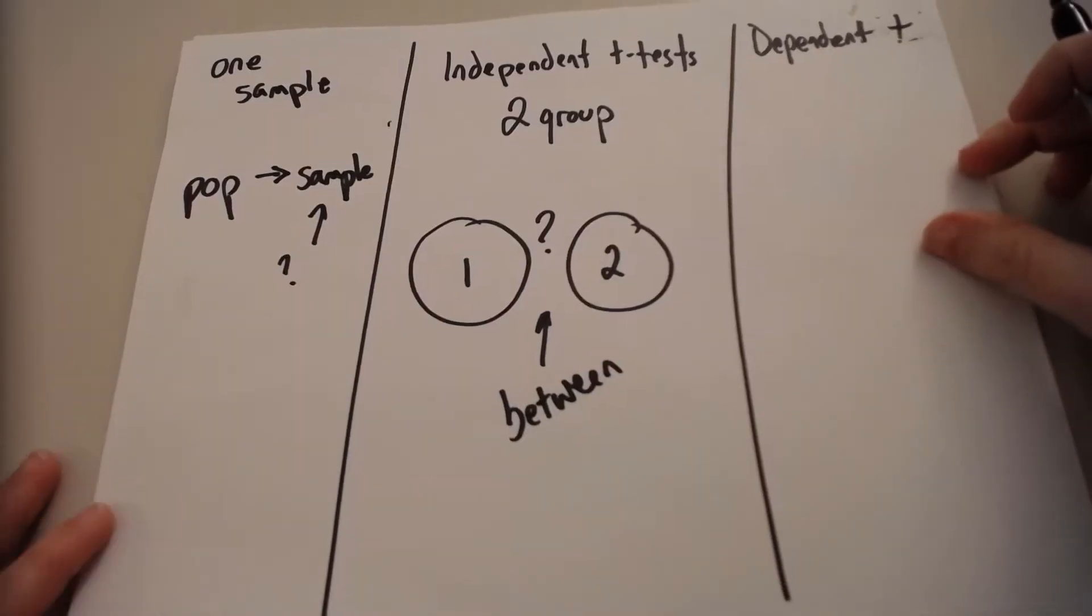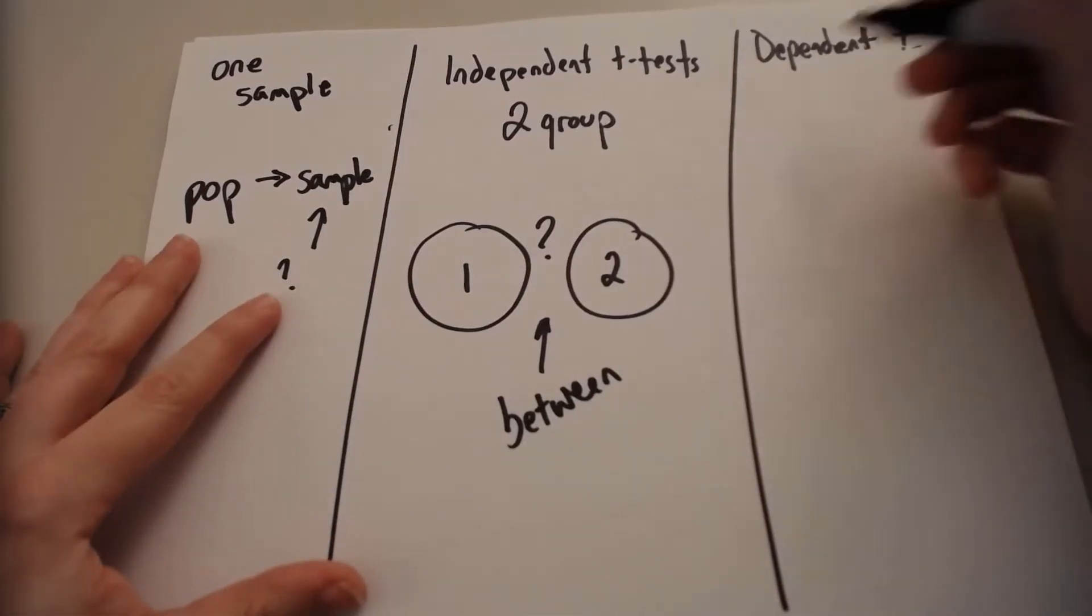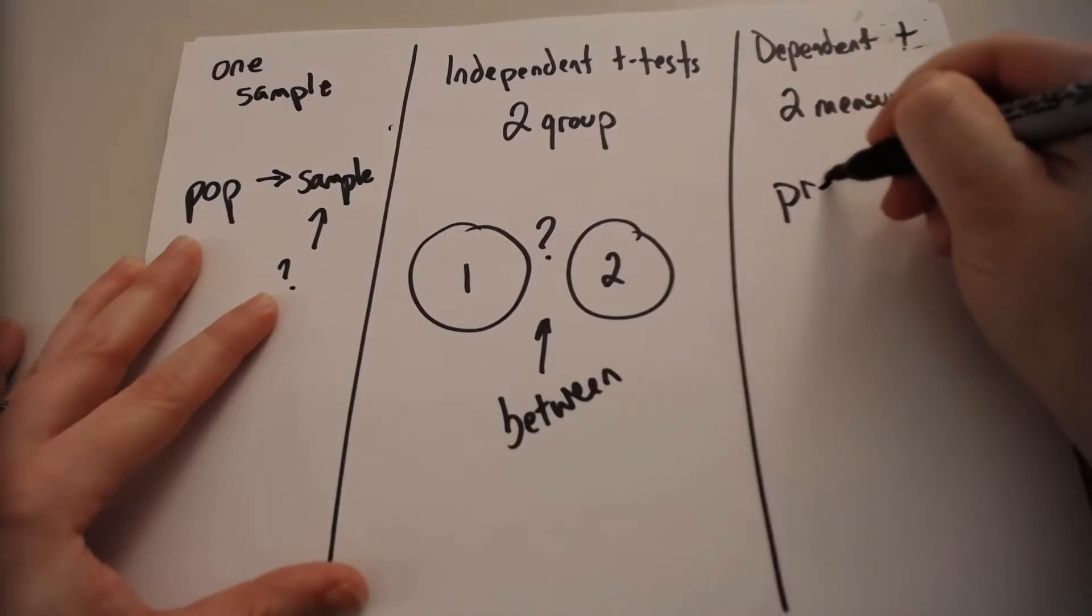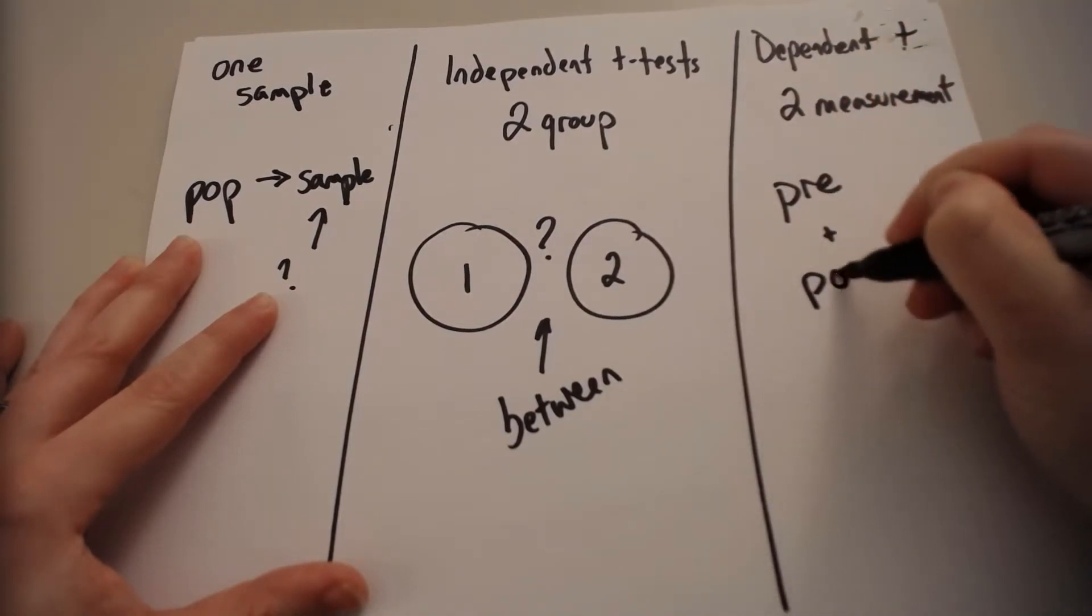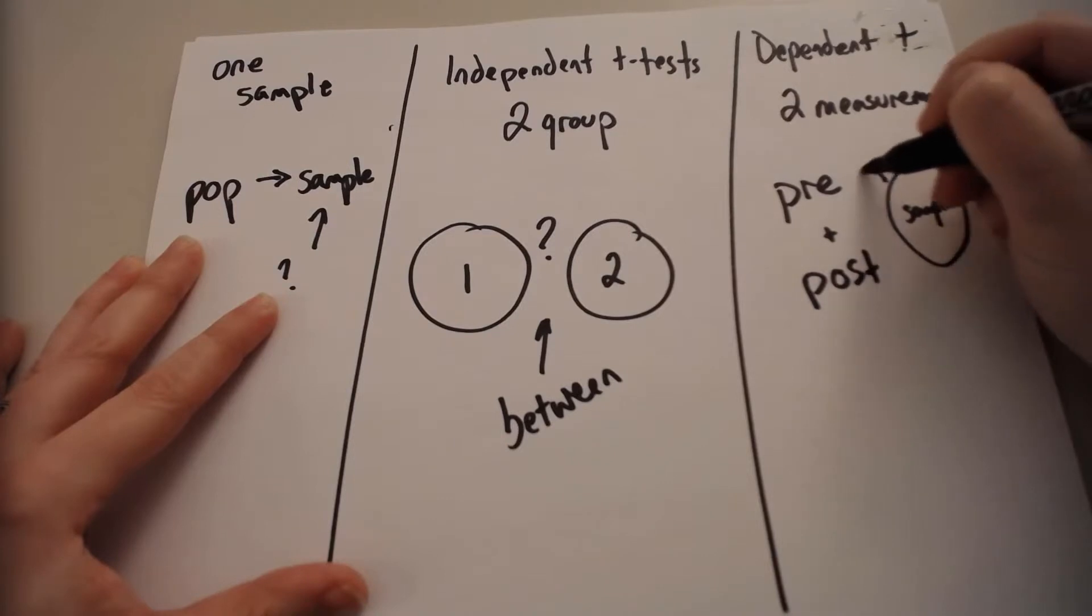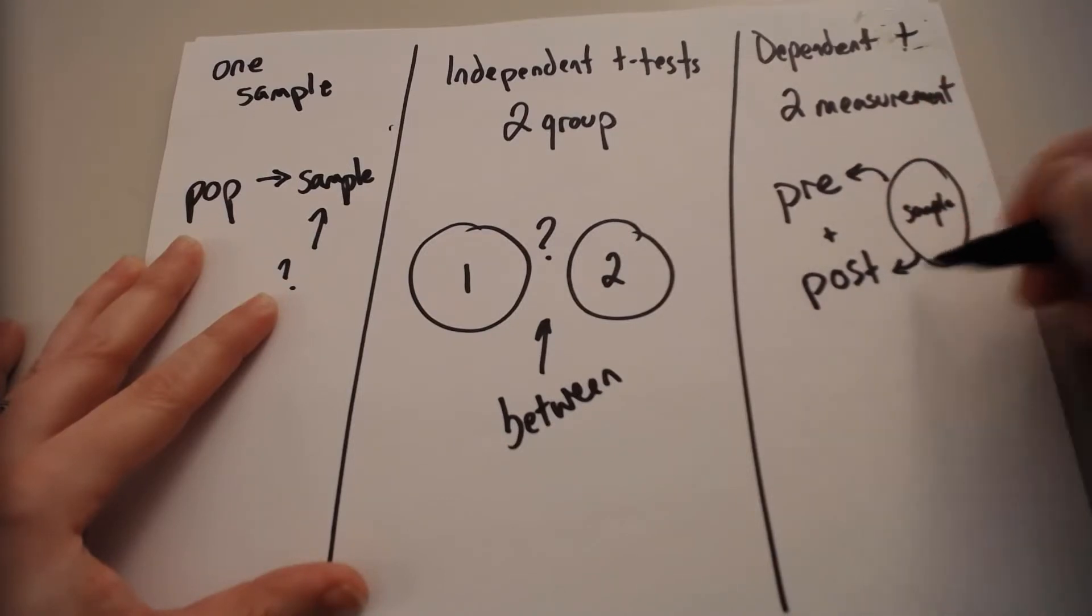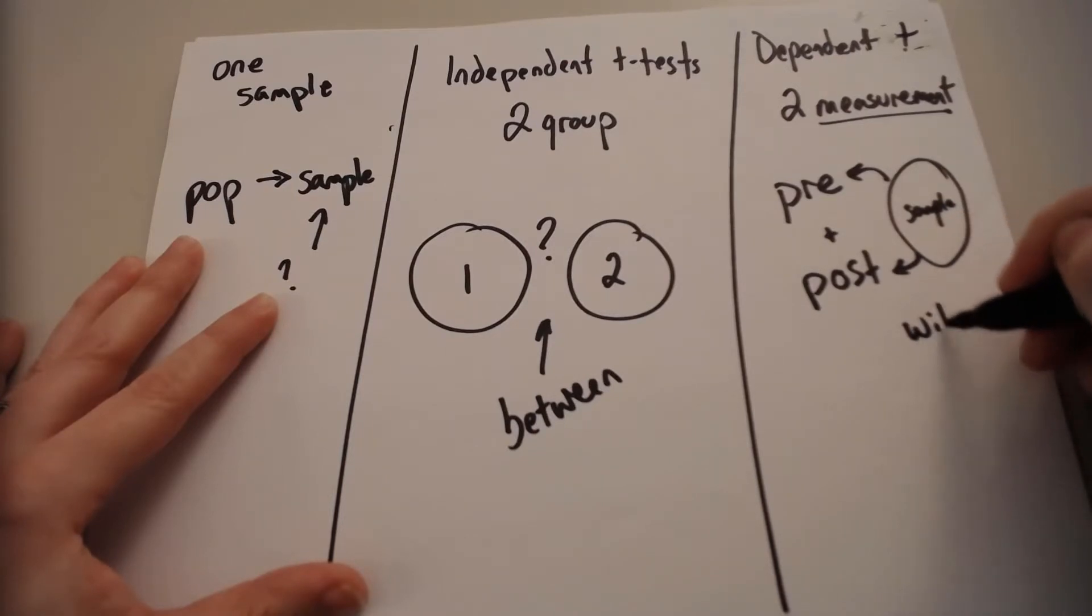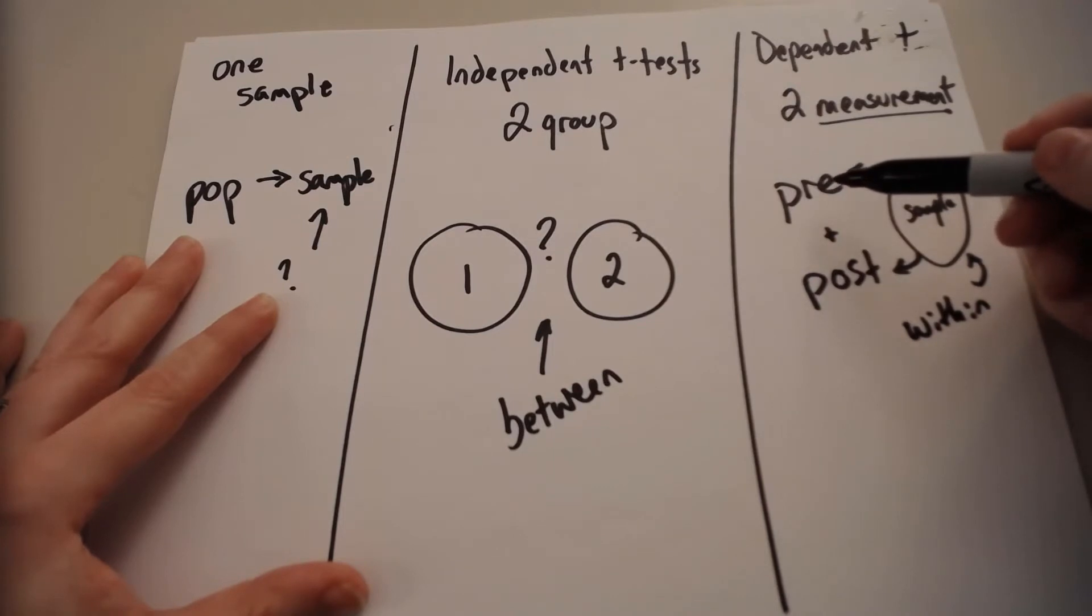We also have dependent t-tests. This is where there's two measurement points. A lot of times this is a pre- and a post-test, and it's the same sample of people, but we're comparing them on their first and their second measurement point to see is there a difference within this sample before and after I've done something.